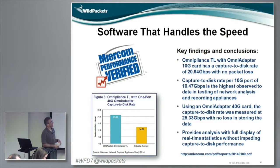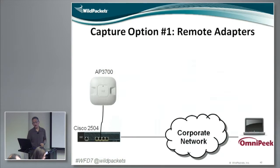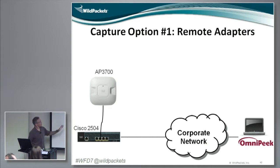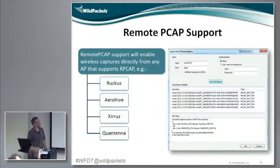Just on the speed — it's not necessarily wireless, but we were independently certified as well with speed, and we really were able to write packets to disk at up to 25 gigabits per second. We really are in a position to handle high-speed wired networks as well. I think we've talked through a lot about the way the remote adapters work — through the AP, through the controller, to OmniPeak — with Cisco and Meru right now. We're also actually working with Meru. We also do support remote PCAP.